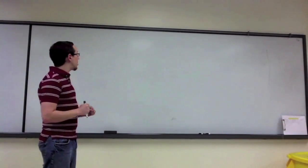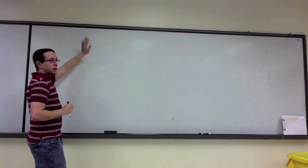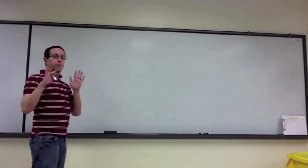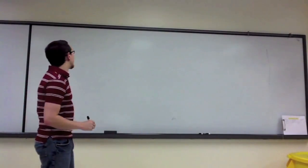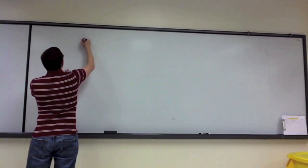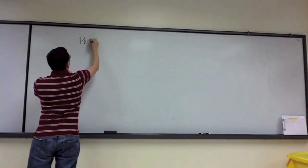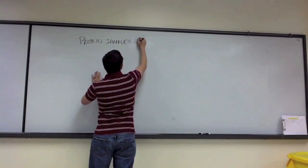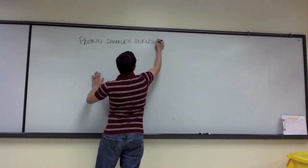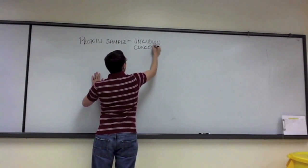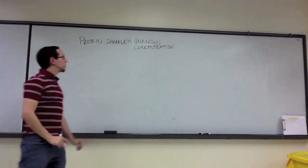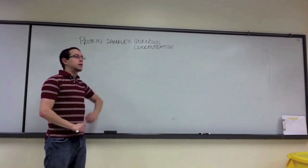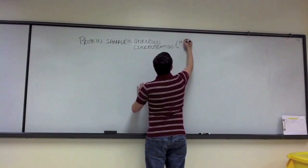At this part of the review, I want to talk about serial dilutions and how we're going to put everything discussed up to this point into practice. First, we have to establish the question we're asking in the spectrophotometry lab. We have a protein sample with an unknown concentration. Concentration is typically given in milligrams per milliliter.